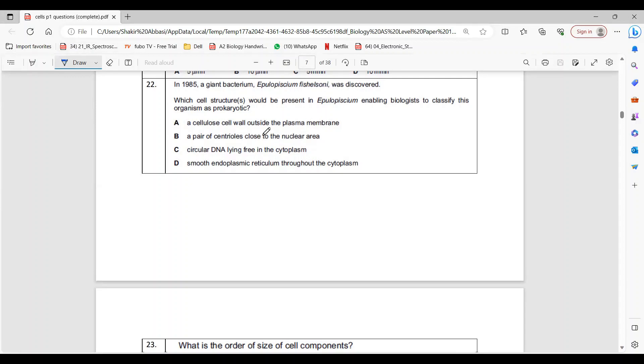Which structures would be present in this bacterium enabling biologists to classify it as a prokaryote? Dear students, you can see it's circular DNA that confirms it's a prokaryote, because cellulose wall is in plants which are eukaryotes, centrioles are in animals which are eukaryotes, ER is in eukaryotes. So the only option is circular DNA.